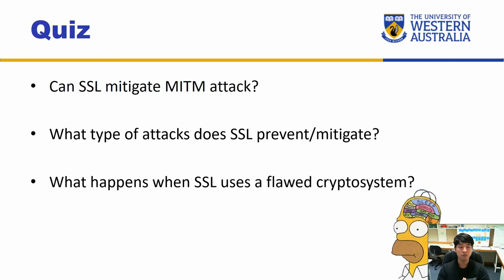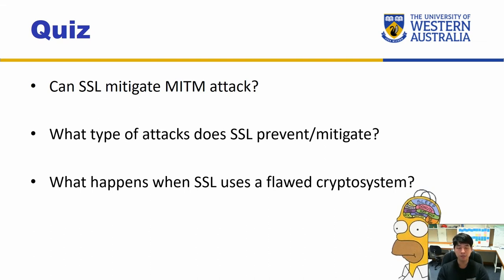What happens when SSL uses a flawed crypto system? This is a trick question. The flawed crypto system means the cipher algorithm is prone to some attack. SSL itself as a procedure should still provide the framework, but because the crypto system is flawed an attacker can perform cryptanalysis, making the whole protocol essentially meaningless — the attacker may be able to obtain the plain text as well as the secret key being used.